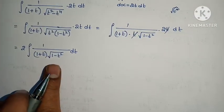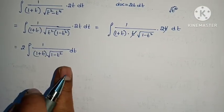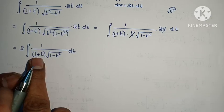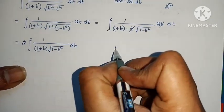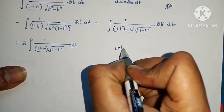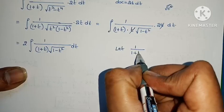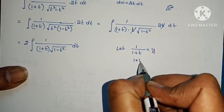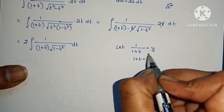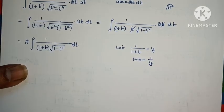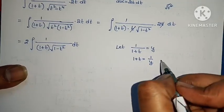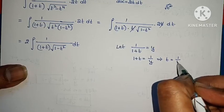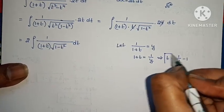This simplifies to integral of 1 by (1 plus t) times root of (1 minus t squared) dt. Now with 1 plus t and 1 minus t squared, let 1 by (1 plus t) equals y, so 1 plus t equals 1 by y, and t equals 1 by y minus 1.